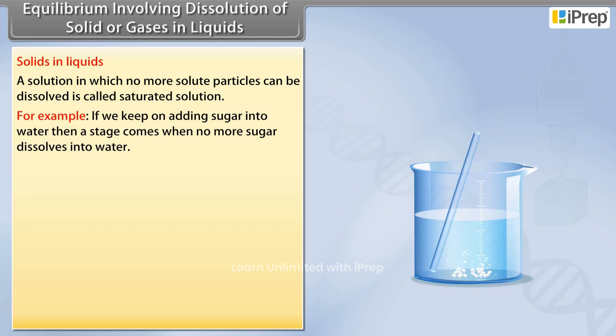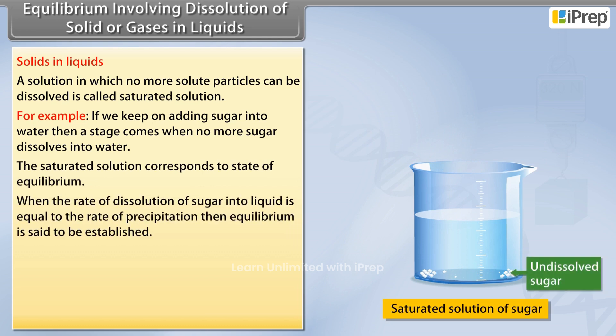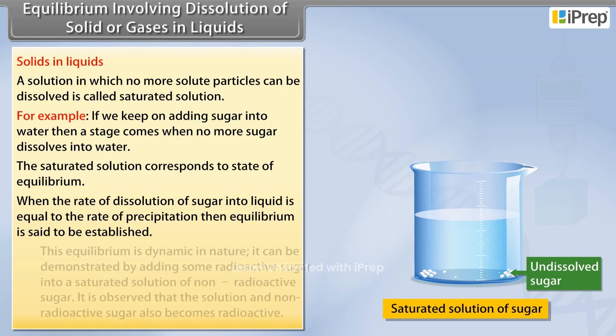...when no more sugar dissolves into water. The saturated solution corresponds to state of equilibrium. When the rate of dissolution of sugar into liquid is equal to the rate of precipitation, then equilibrium is said to be established.